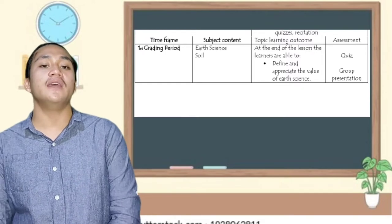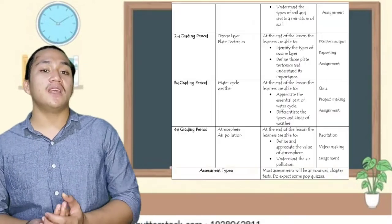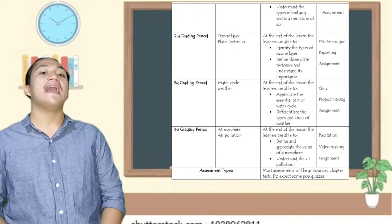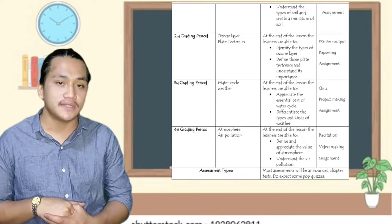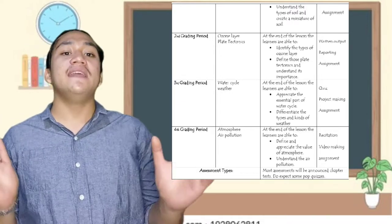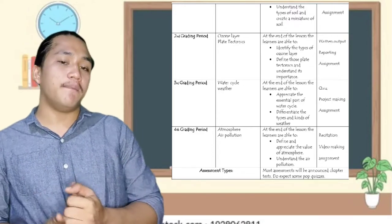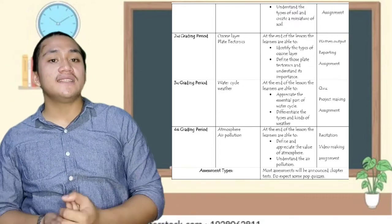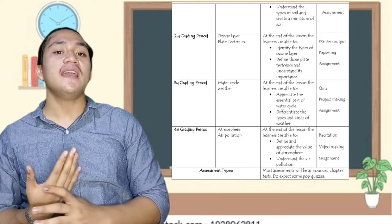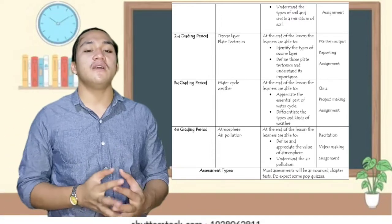The assessments for these two topics are answered quizzes, group presentation, assignment. Time frame for the second grading period, with the content of ozone layer and plate tectonics. The topic learning outcome: at the end of the lesson, the learners are able to identify the types of ozone layer, define plate tectonics and understand its importance. The assessments are written output, reporting, and assignments.